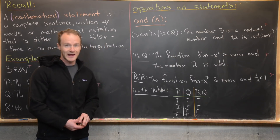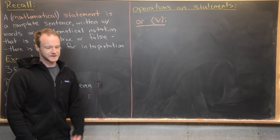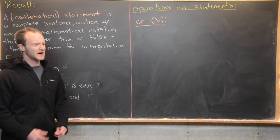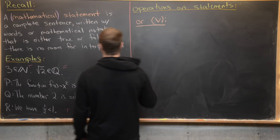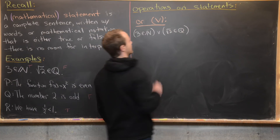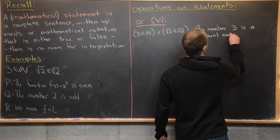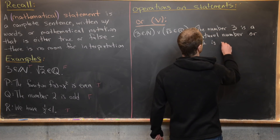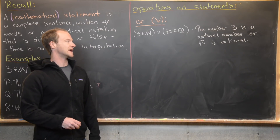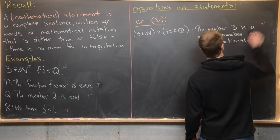Now let's look at the OR conjunction. This is not the exclusive or — both input statements can be true and still give something true. For example, 'three is a natural number OR the square root of two is rational' — written in symbols using the wedge. That sentence is true because three is indeed a natural number, so even though root two is not rational, the OR statement holds.